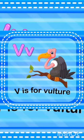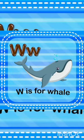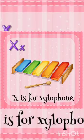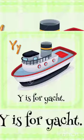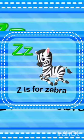V for Vulture, W for Whale, X for Xylophone, Y for Yacht, and Z for Zebra.